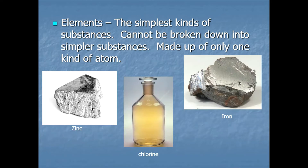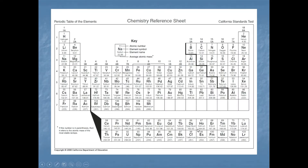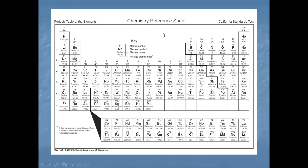How do you know if something is an element? The easy way is to look on the periodic table — the periodic table of the elements. If something is an element, it is on there. For instance, number 26 is iron, number 30 is zinc, and number 17 is chlorine. Number 1 is hydrogen, the most abundant element in the universe.